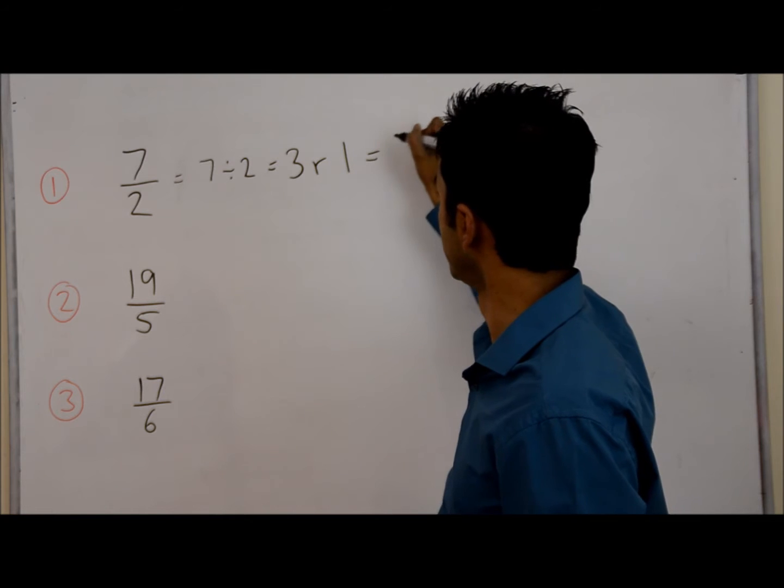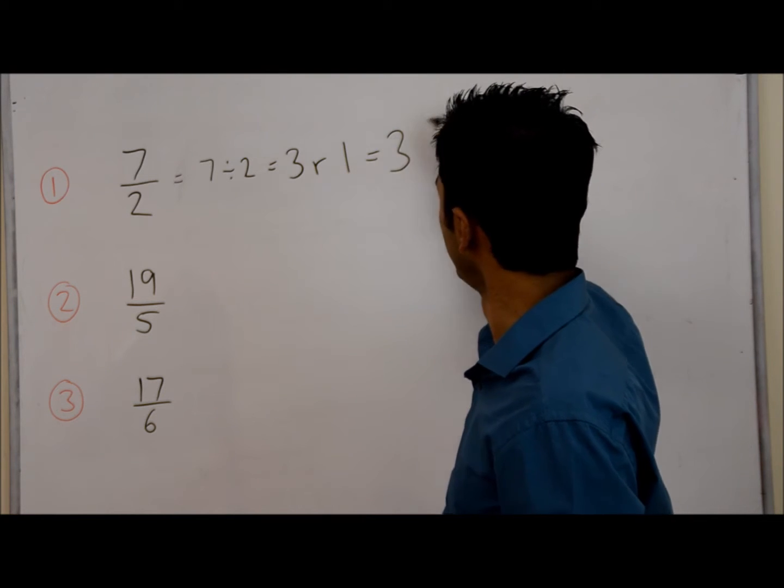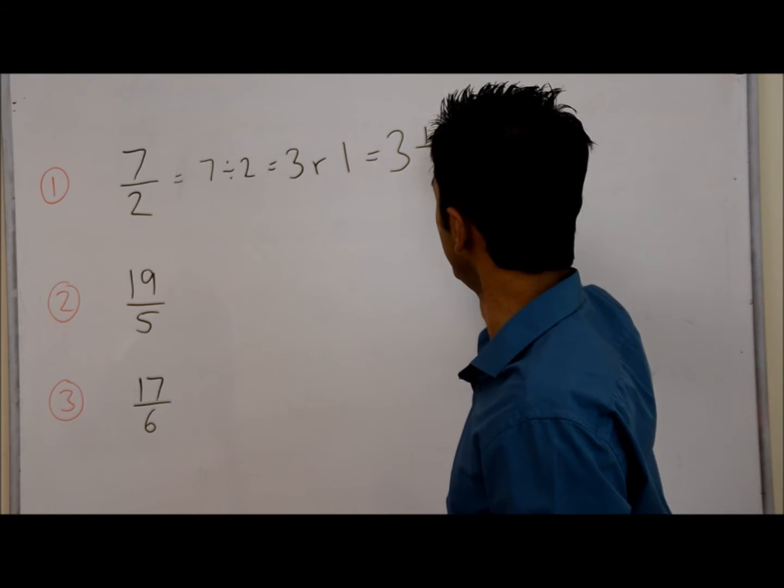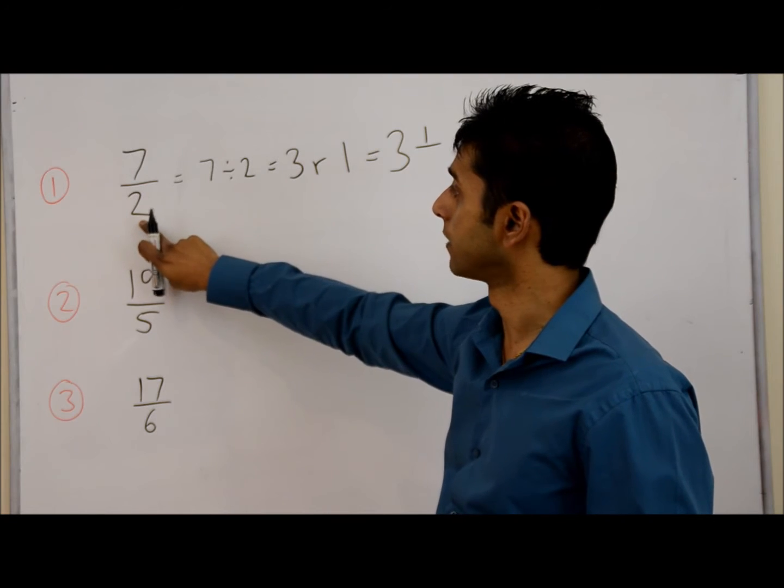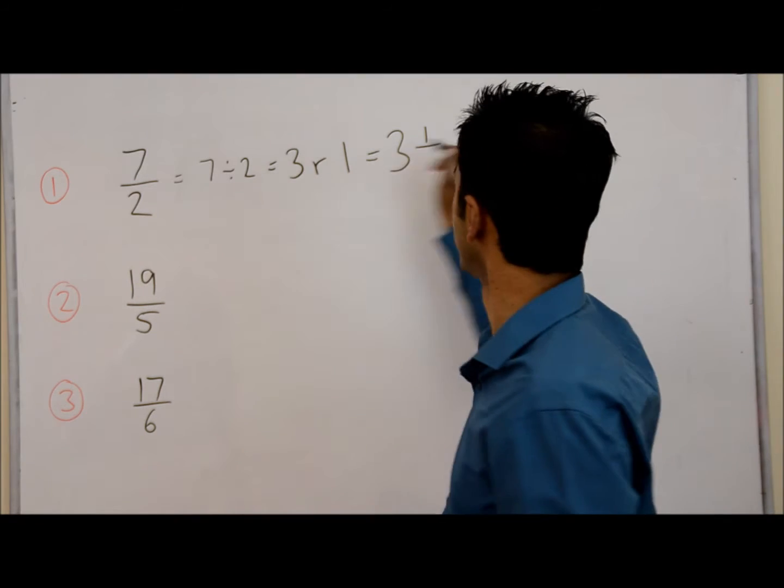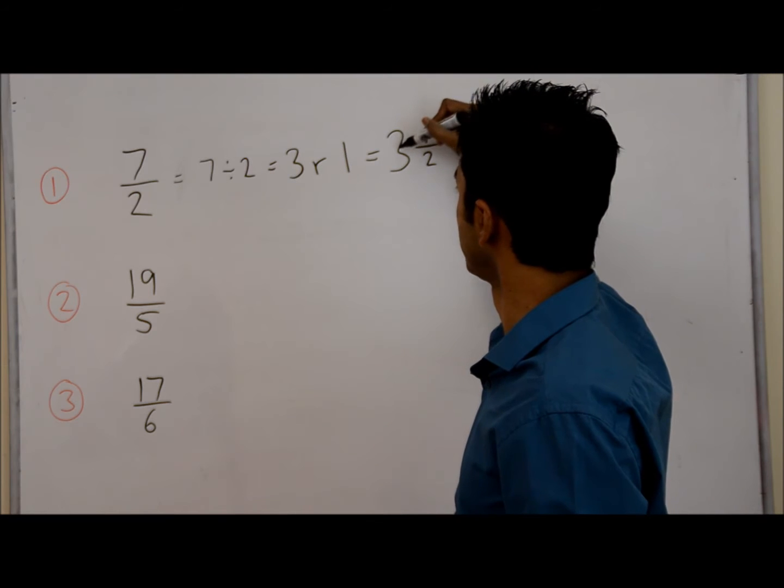And the way you write this as a mixed fraction is a big 3, the remainder of 1 goes on top of the fraction as your numerator, and your denominator is the same as your denominator in the question, so it's 2. So your final answer is 3 and a half.